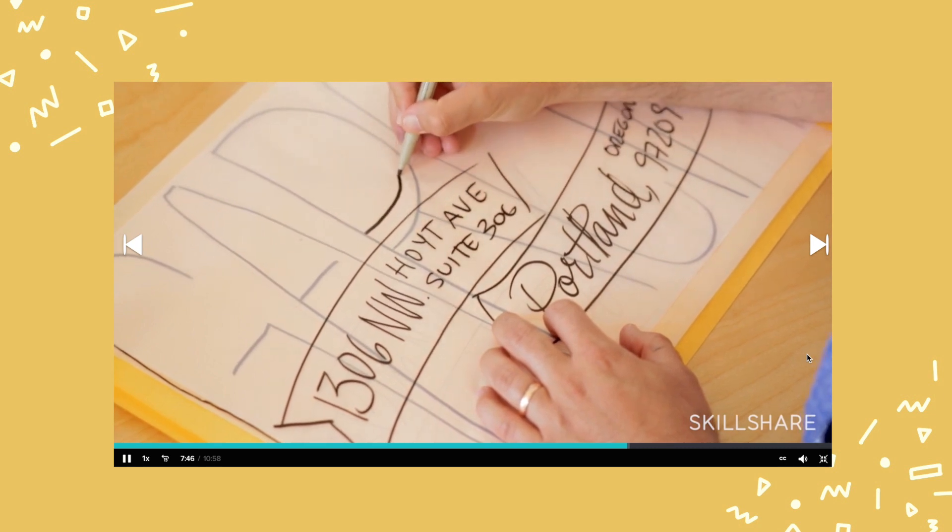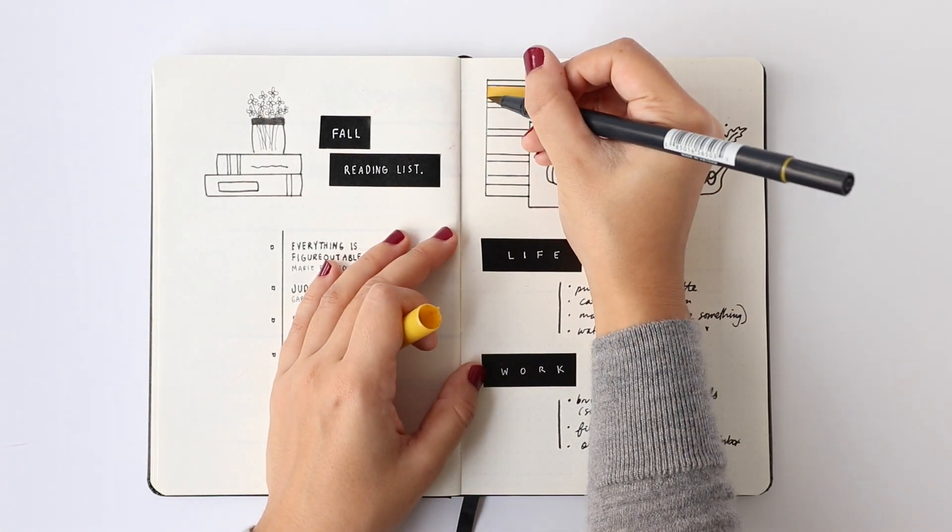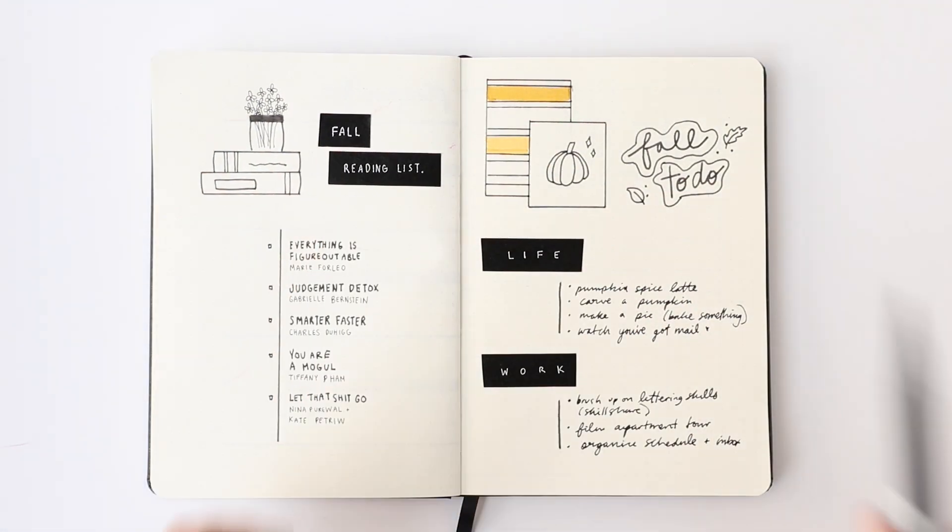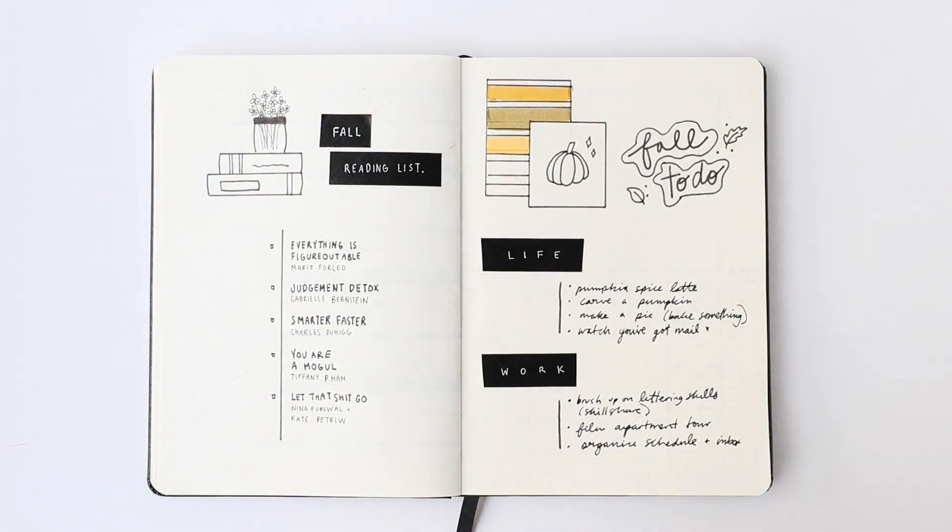An annual subscription costs less than ten dollars a month, but if you sign up with the link in the description you can get a two-month free trial. Definitely worth checking out, especially for those of you who want to take your planner spreads to the next level by learning some new handwriting or doodling skills.